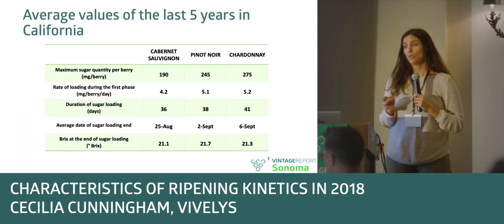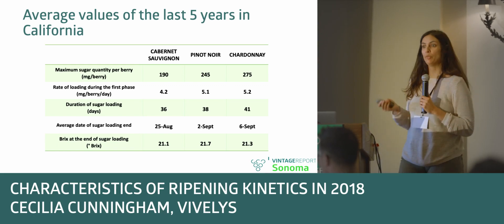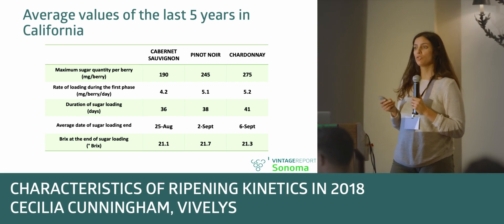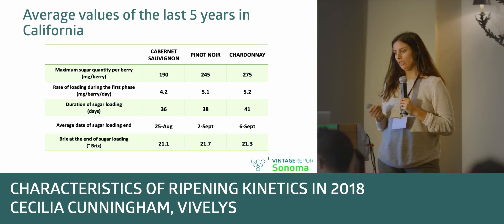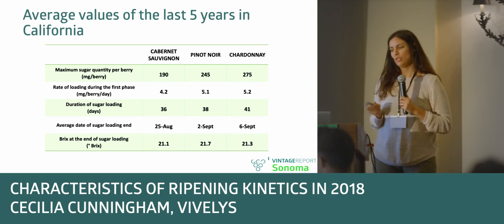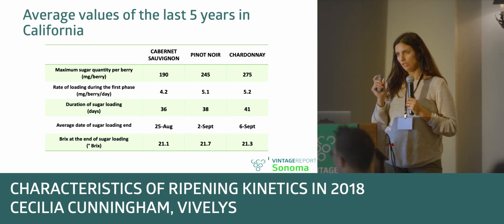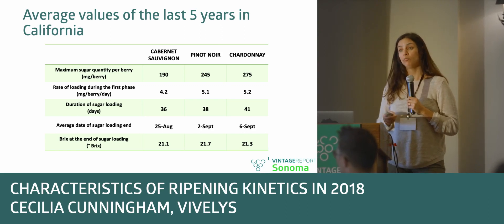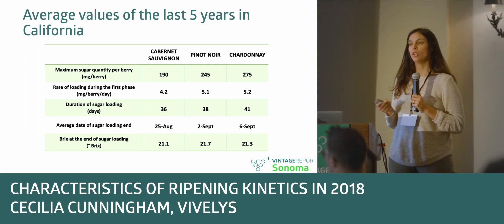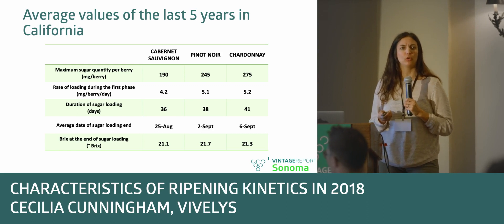For the last five years in California, we have reference numbers for each variety. Cabernet Sauvignon, in average, reaches around 190 milligrams of sugar per berry, and it's not as good a loader as Pinot and Chardonnay. The speed is a parameter that changes a lot from year to year, but mainly what we look at is the duration and the date — for Cabernet Sauvignon, around the 25th of August for average California, and for Pinot and Chardonnay, beginning of September. The Brix is always between 21 and 22, which we consider good Brix at the end.